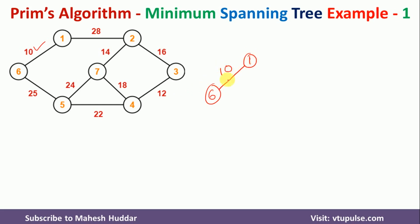Next, we identify the neighbors of nodes 1 and 6 and select the one with the minimum weight. The neighbor of node 1 is node 2 with weight 28. The neighbor of node 6 is node 5 with weight 25. Since 25 is the smallest, we draw an edge from node 6 to node 5 with weight 25.